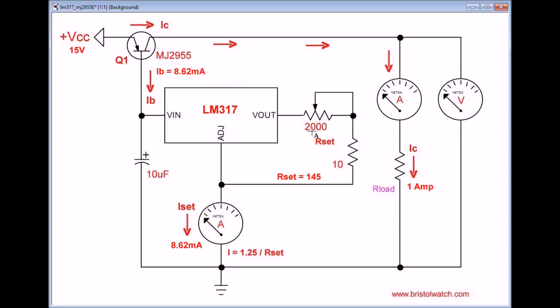At any rate, what you will find here is the current through the LM317 is set by RSET, which is a combination of these two resistors. Your formula is 1.25 divided by RSET.